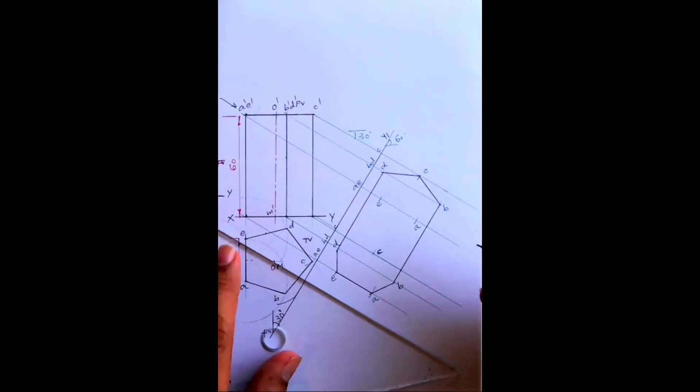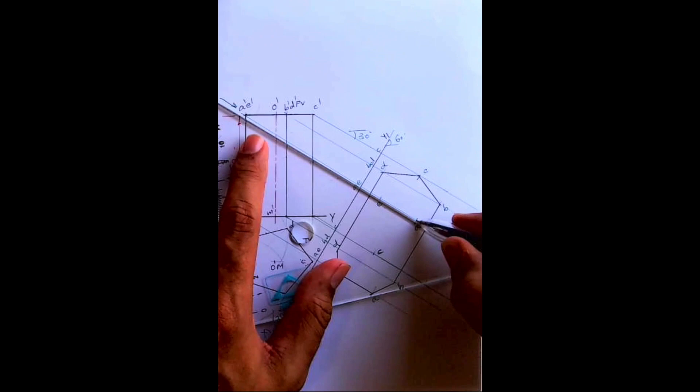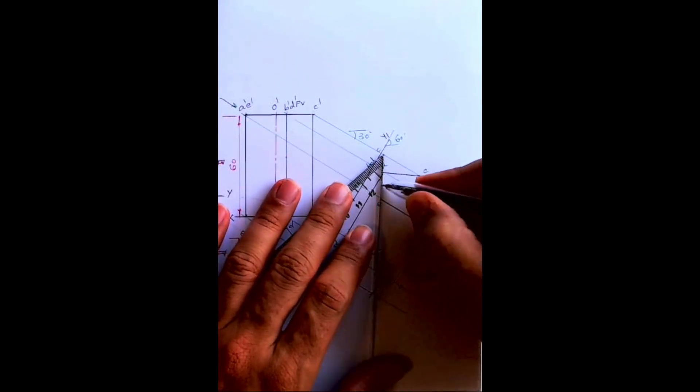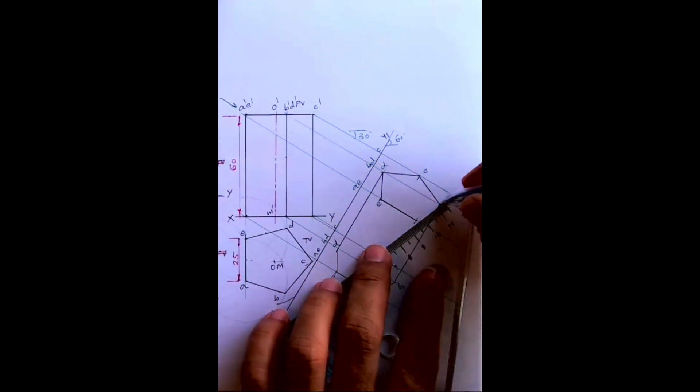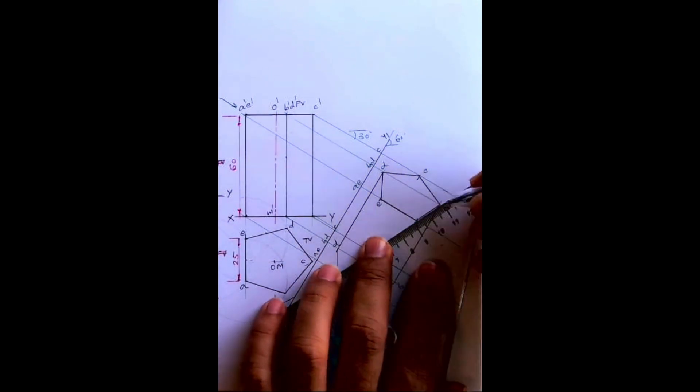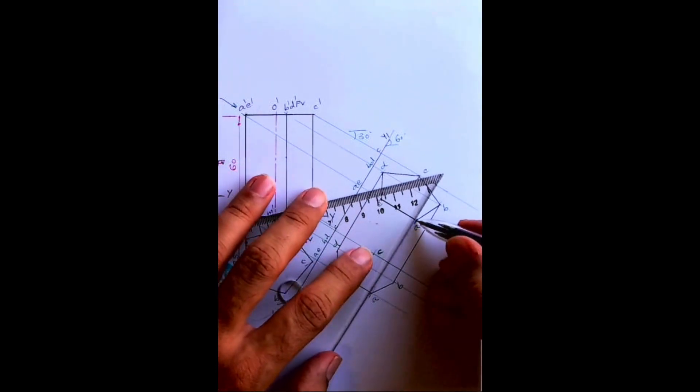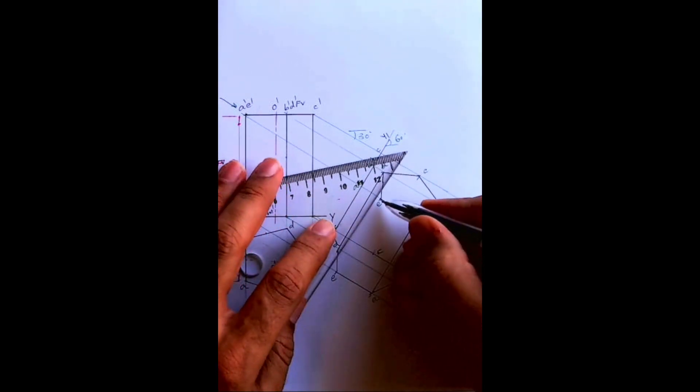Then this A-E would be dark because it is nearer to the observer, so whatever line passing through that point would be dark. So this E-E and A-A would be also dark. See this.